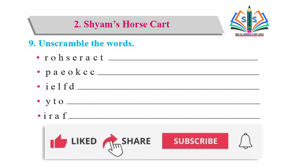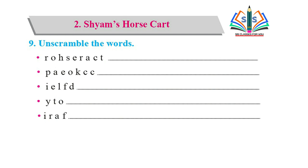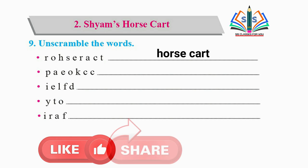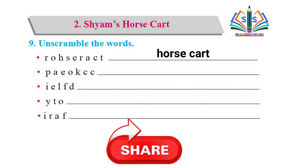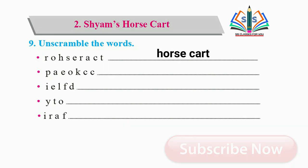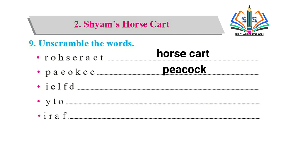Our ninth question is: unscramble the words. यहाँ पर कुछ spellings आगे-पीछे करके दी हैं, हमें उन्हें सही करके एक सही word बनाना है। First one दिया हुआ है: r o h s e c a r t - इसको serial wise लगाएंगे तो बनेगा horse cart.